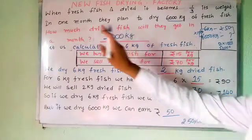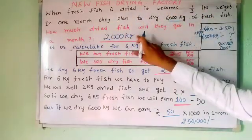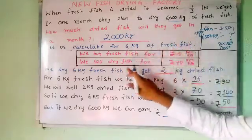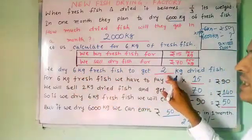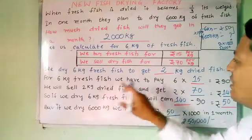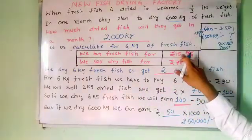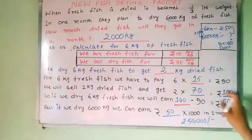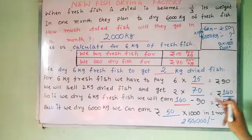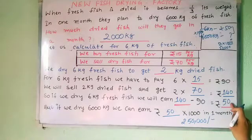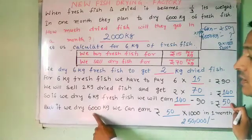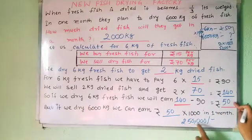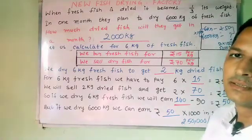So once again: when fresh fish is dried it becomes one third. So 6000 becomes one third, which is 2000. When calculating cost: fresh fish is bought at rupees 15, dry fish is sold at rupees 70. We dry 6 kg fresh fish to get 2 kg — one third of 6 is 2. Fresh fish cost: 6 into 15 is 90 rupees. Dried fish revenue: 2 into 70 is 140 rupees. The difference is 140 minus 90 equals 50 rupees profit on 6 kg. To calculate for 6000 kg, multiply by 1000: 50 into 1000 equals rupees 50,000 earned in one month.